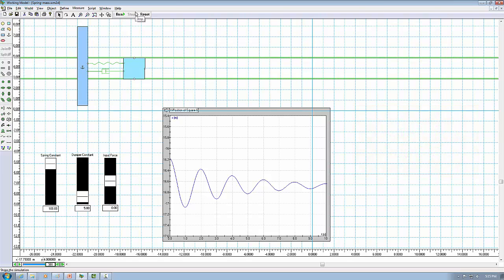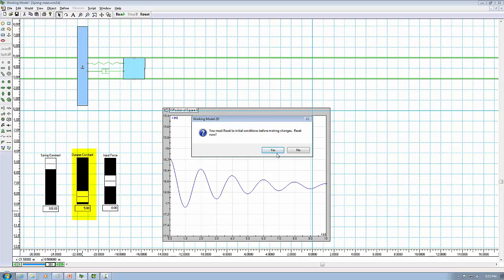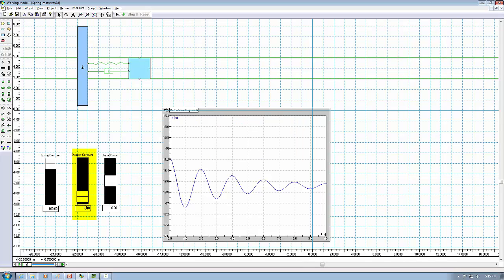Now, let's increase the damping coefficient to 100 Ns per meter. Now the mass is not oscillating at all. Its amplitude just exponentially decays.